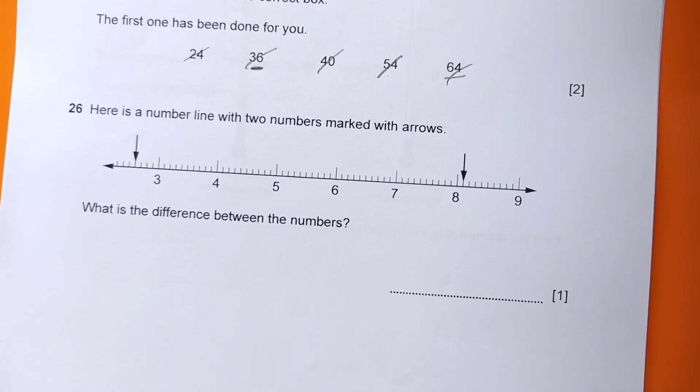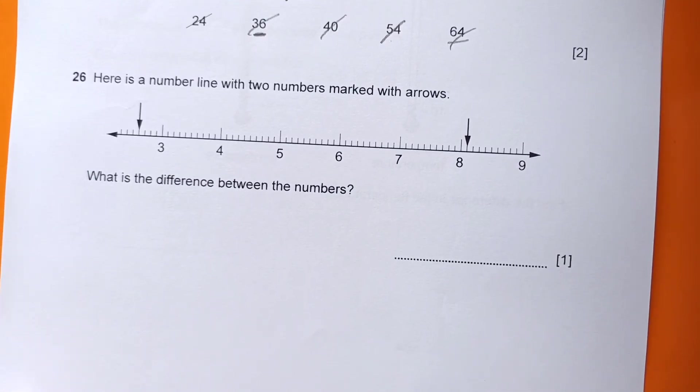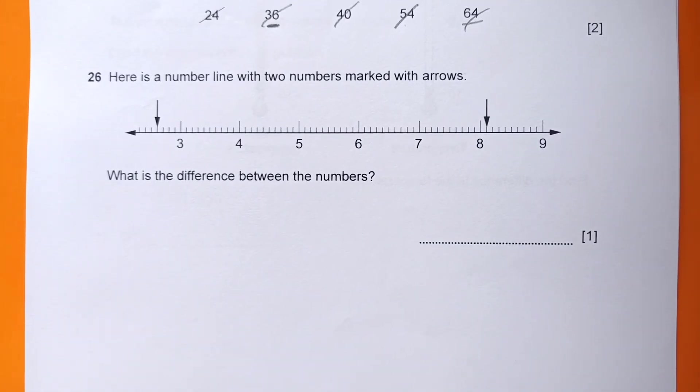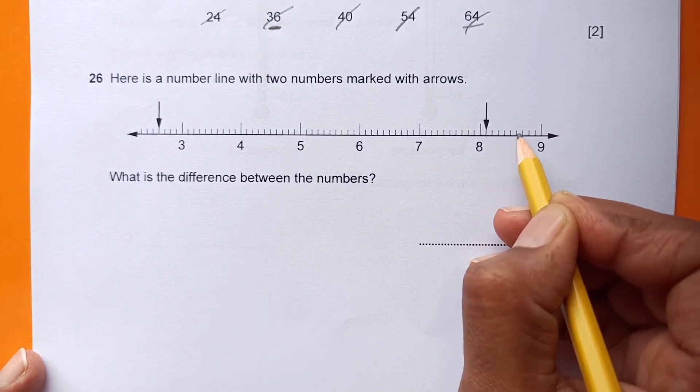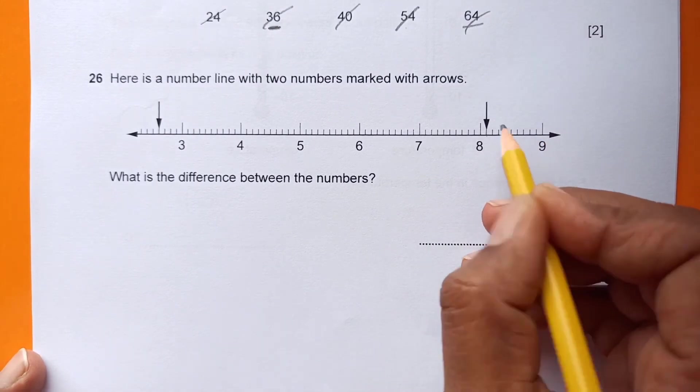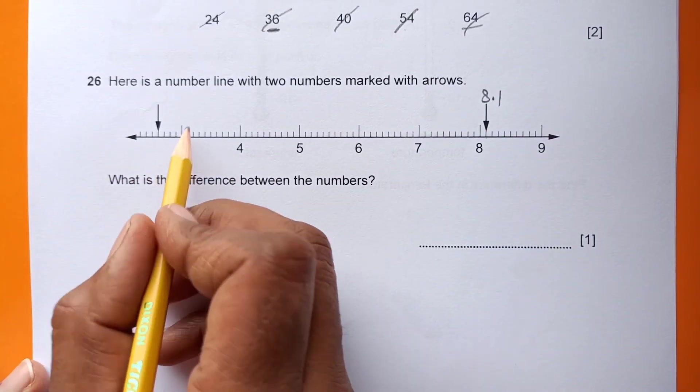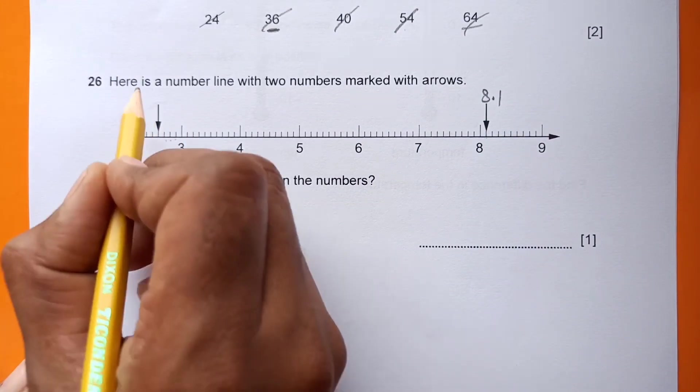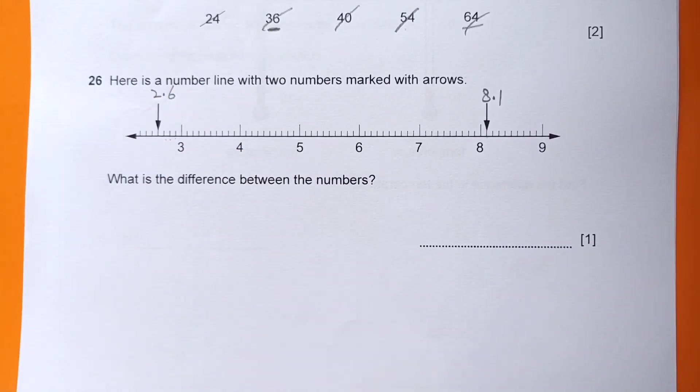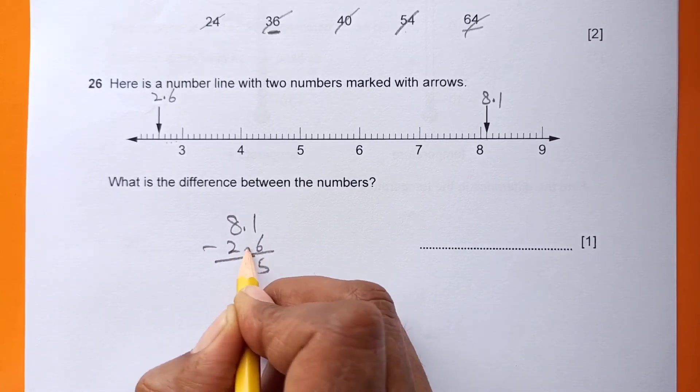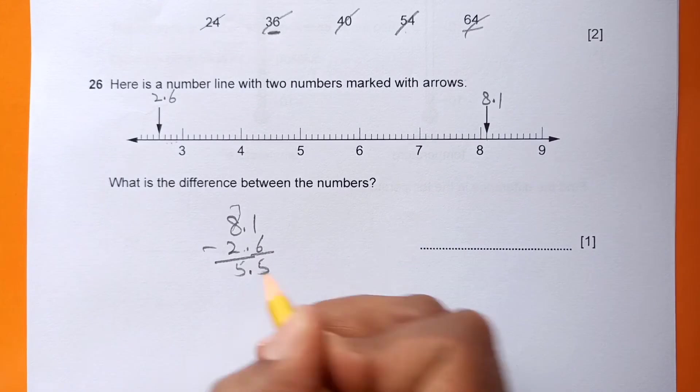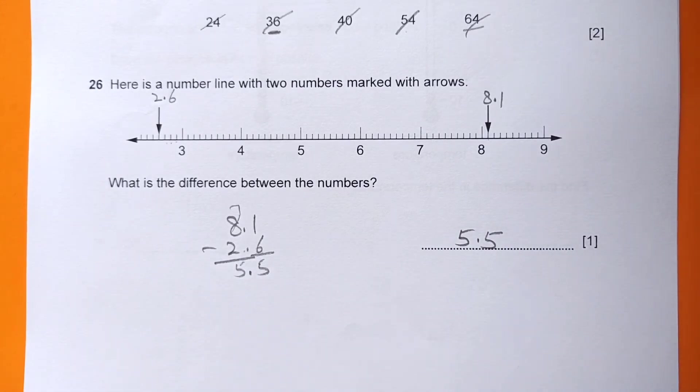Number 26: Here is a number line with two numbers marked with arrows. What is the difference between the numbers? We have to see what number this is. This is 8.1 - one, two, three, four, five, six, seven, eight, nine. This is 8.1, and this is 2.6. So 8.1 minus 2.6 equals 5.5.